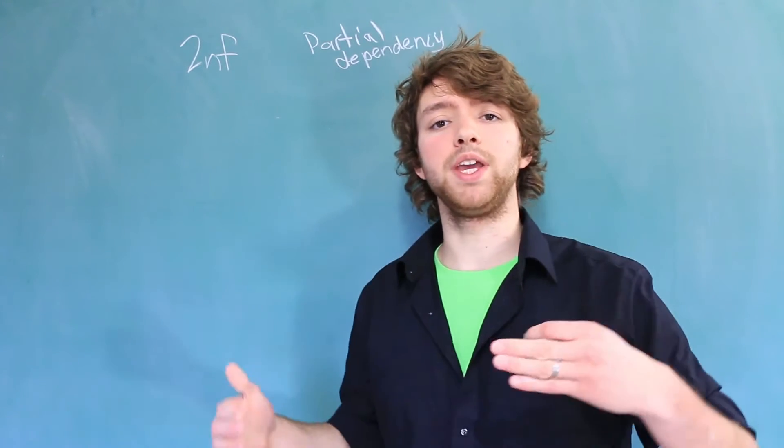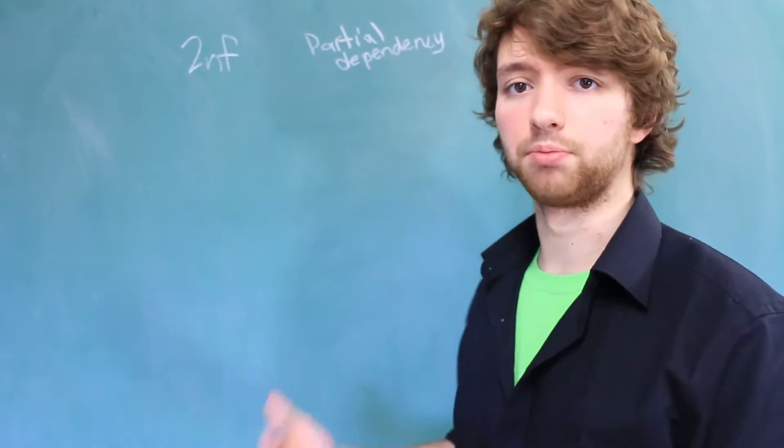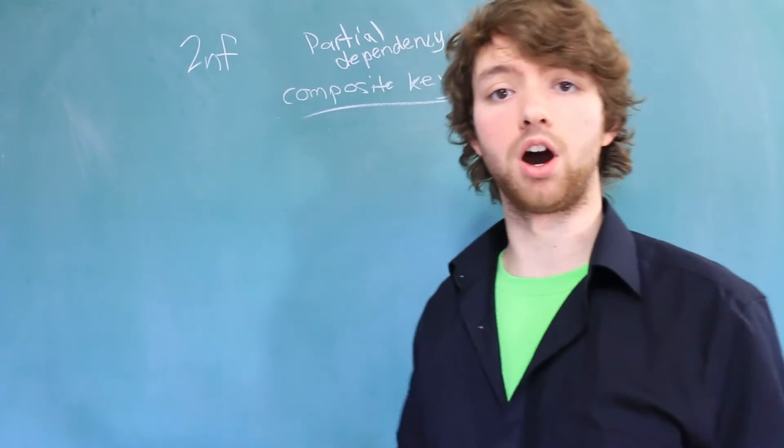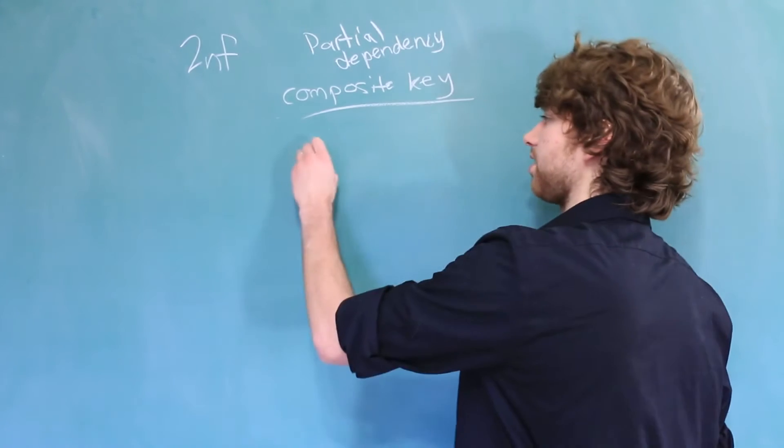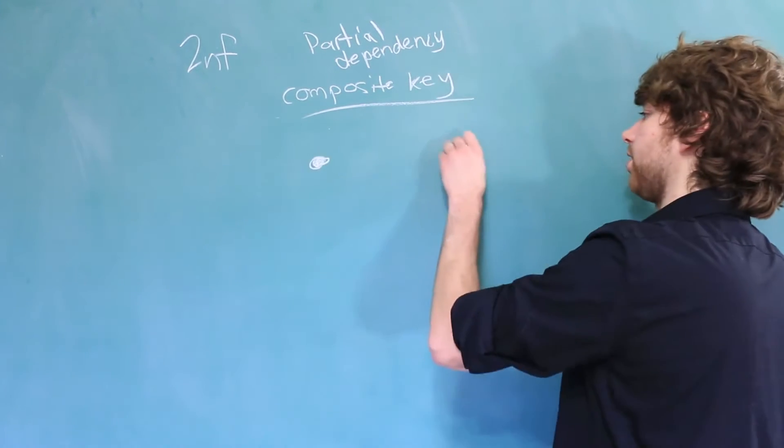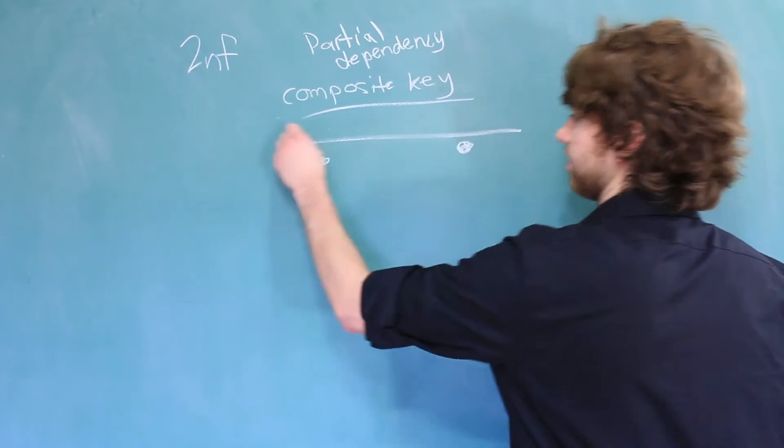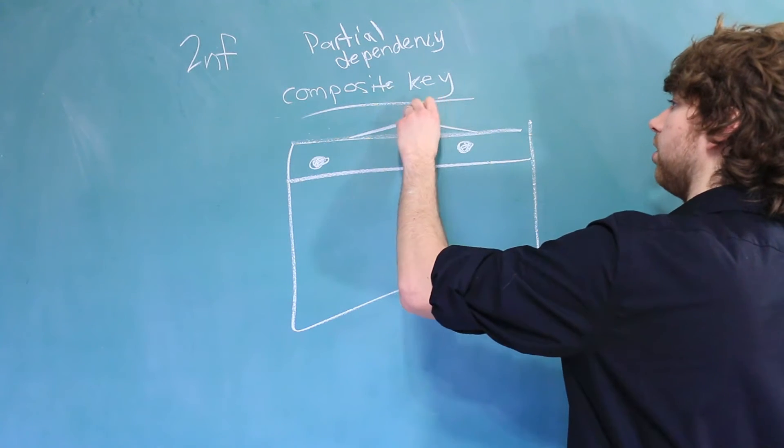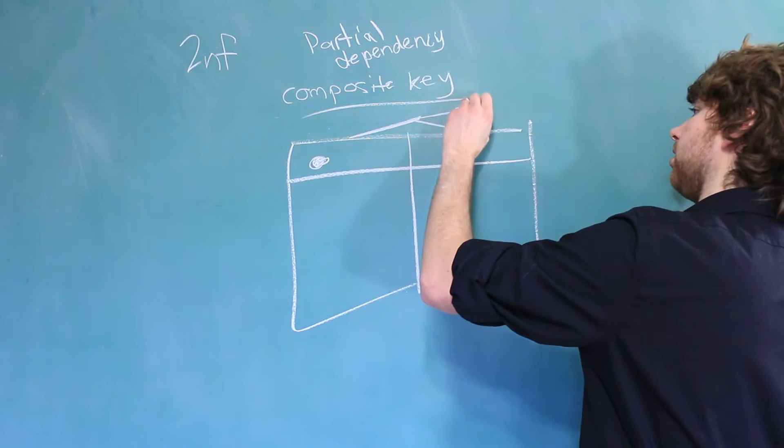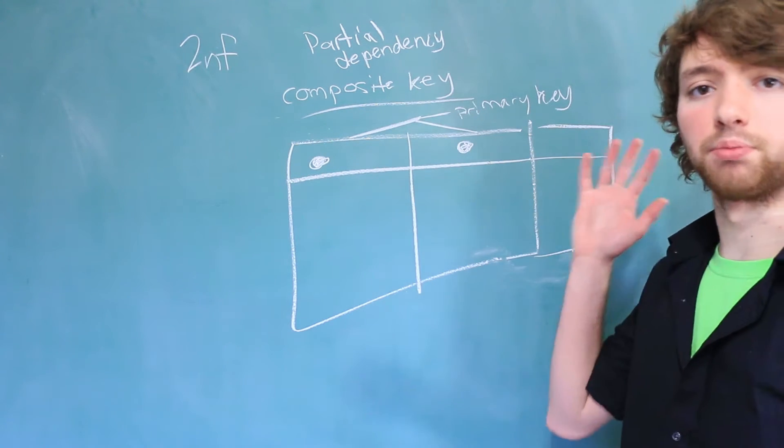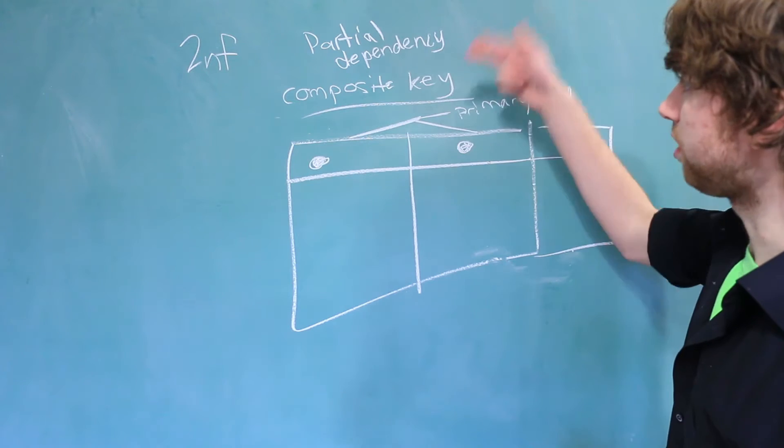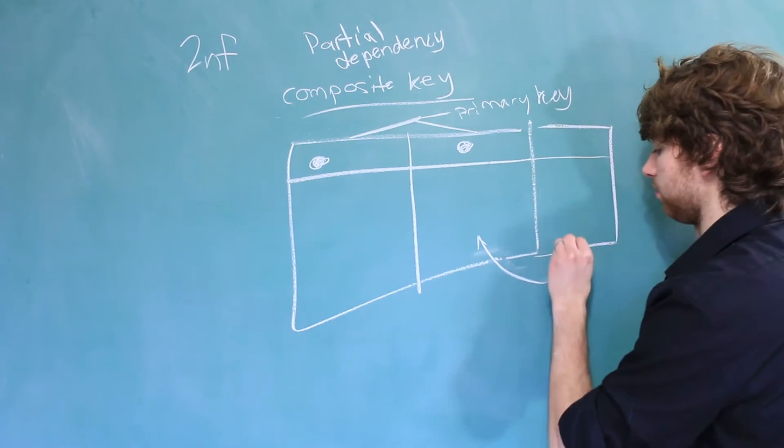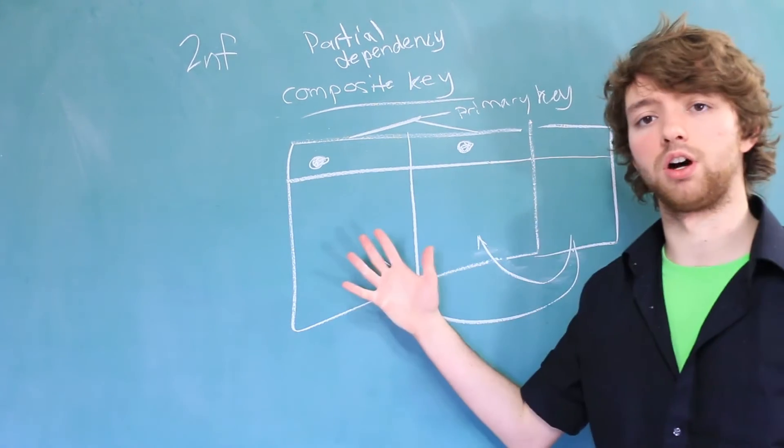Now partial dependencies come in when we have compound or composite primary keys. Now a composite key is a key that consists of multiple columns. So let's say this over here is a column, and this over here is a column, and these are on a table, right? And we could say that the combination of both of these columns are going to be the primary key. This other column is in here because it depends on the primary key. But when we have composite keys, it actually has to depend on both of the columns. If for any reason it only depends on one of the columns, we have what's known as a partial dependency.